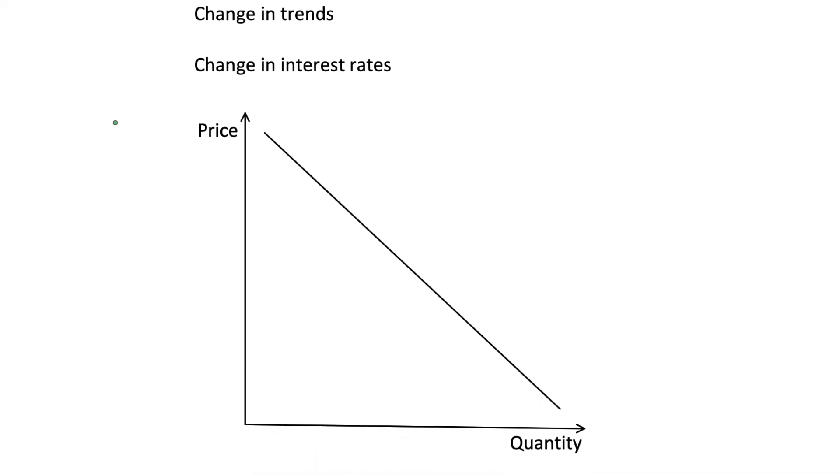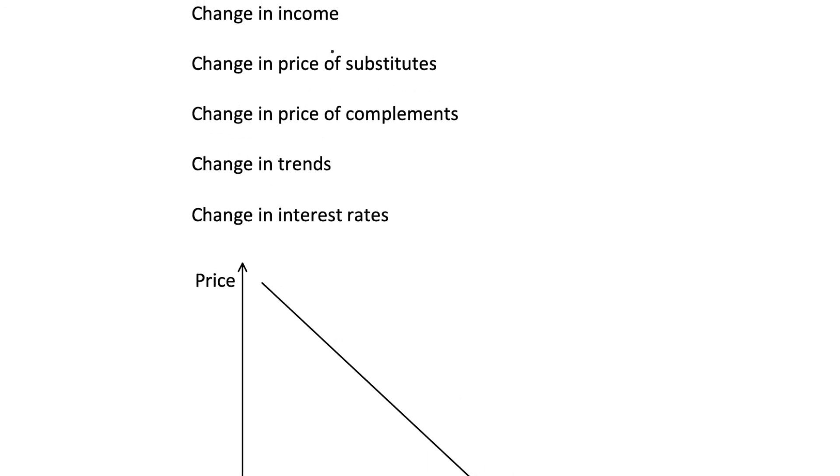So let's consider that we initially again have a demand curve D and we've got it on this axis with price, or these axes with price on the vertical axis and quantity on the horizontal axis. And let's consider that we have a change in income and more specifically, we're going to have an increase in income.